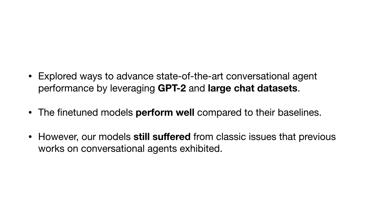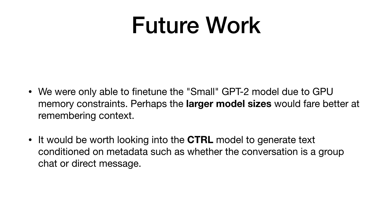So to recap, we explored ways to advance conversational agent performance by using GPT-2 on large chat datasets. In the future, one could explore training larger models of GPT-2, or looking at the control model, which allows you to condition on message metadata such as whether the conversation is a group chat or not. The code is available at this link.